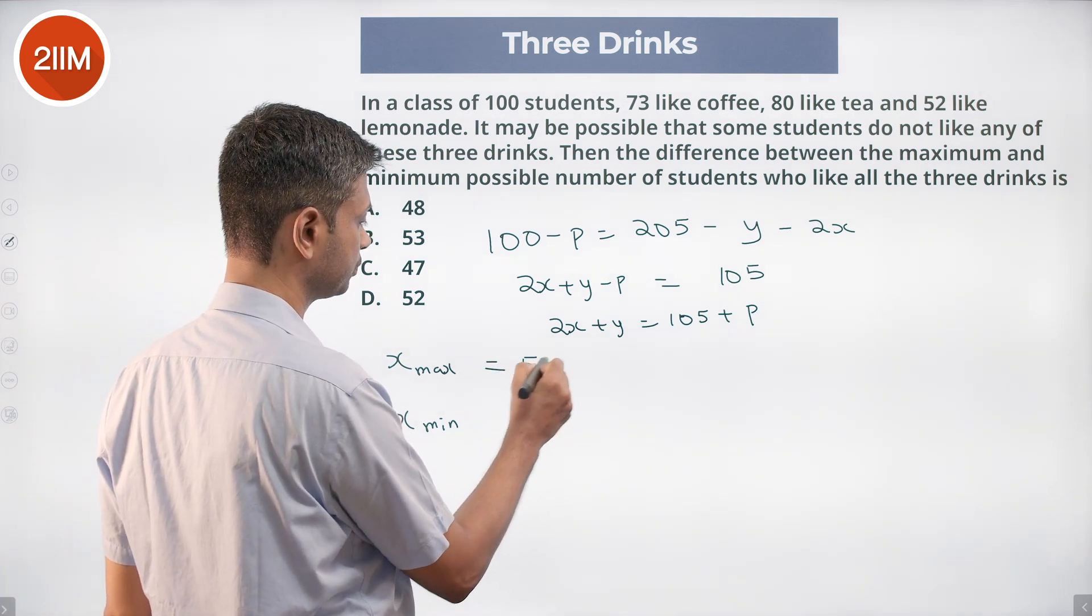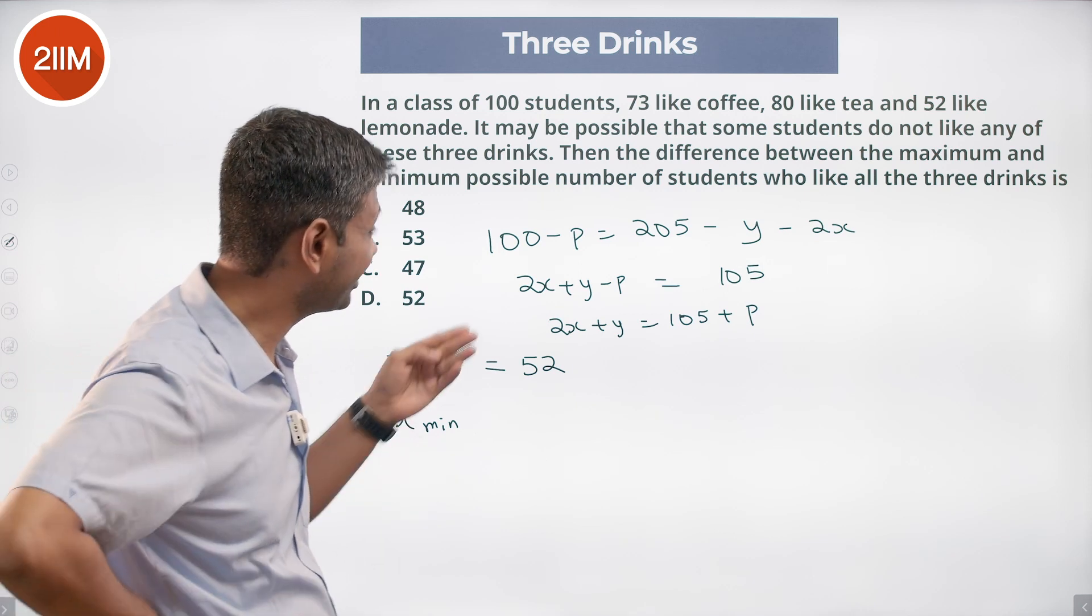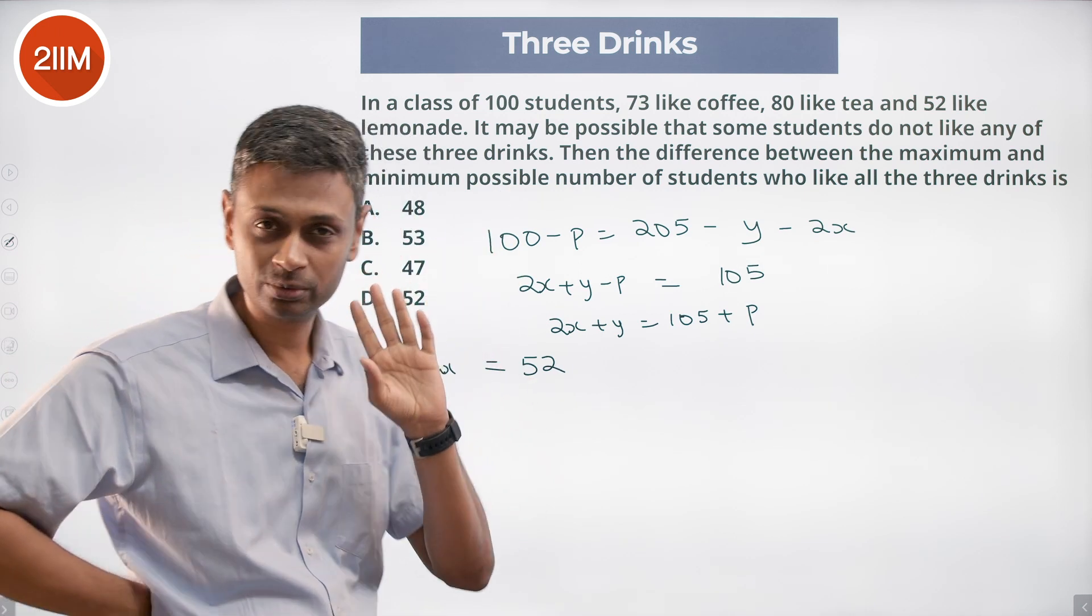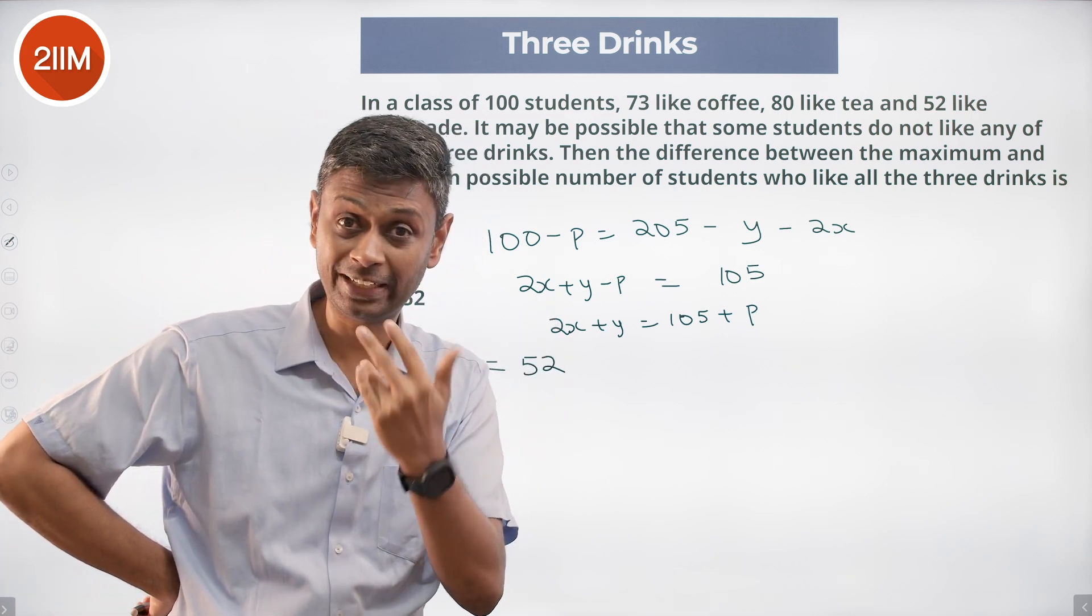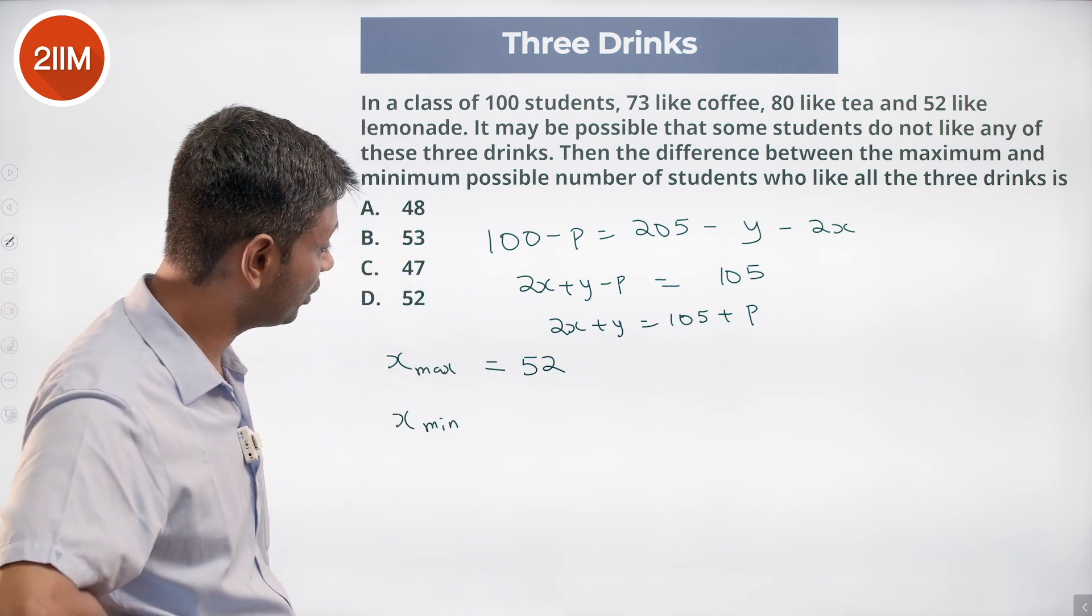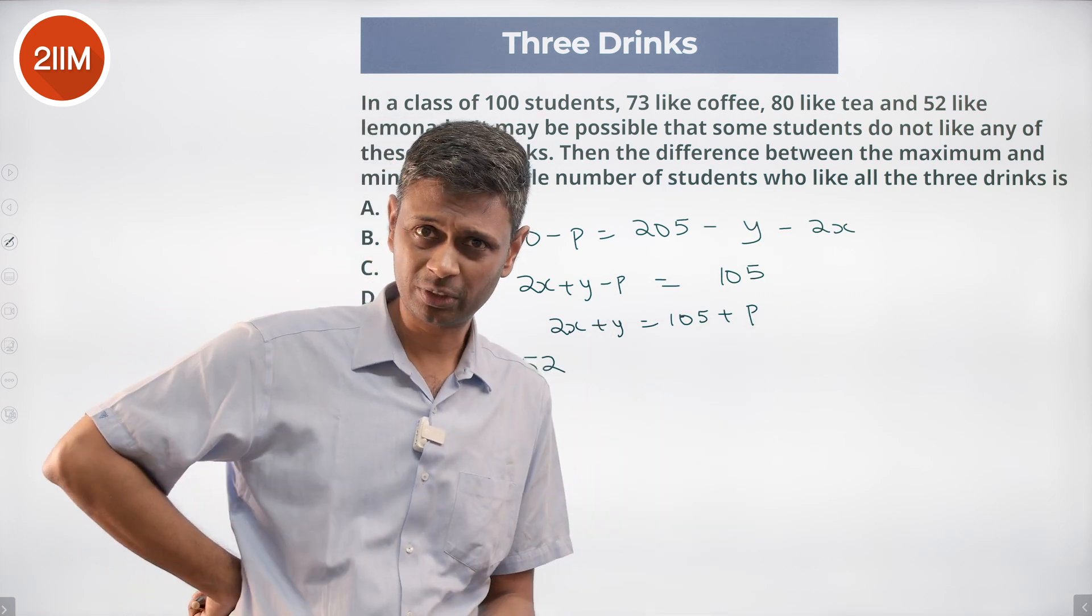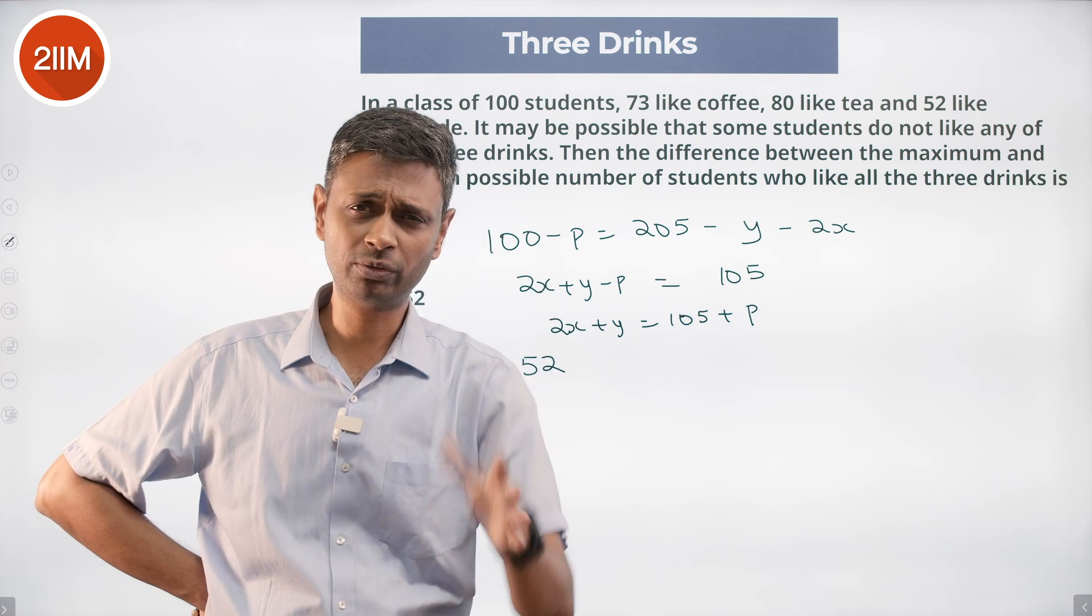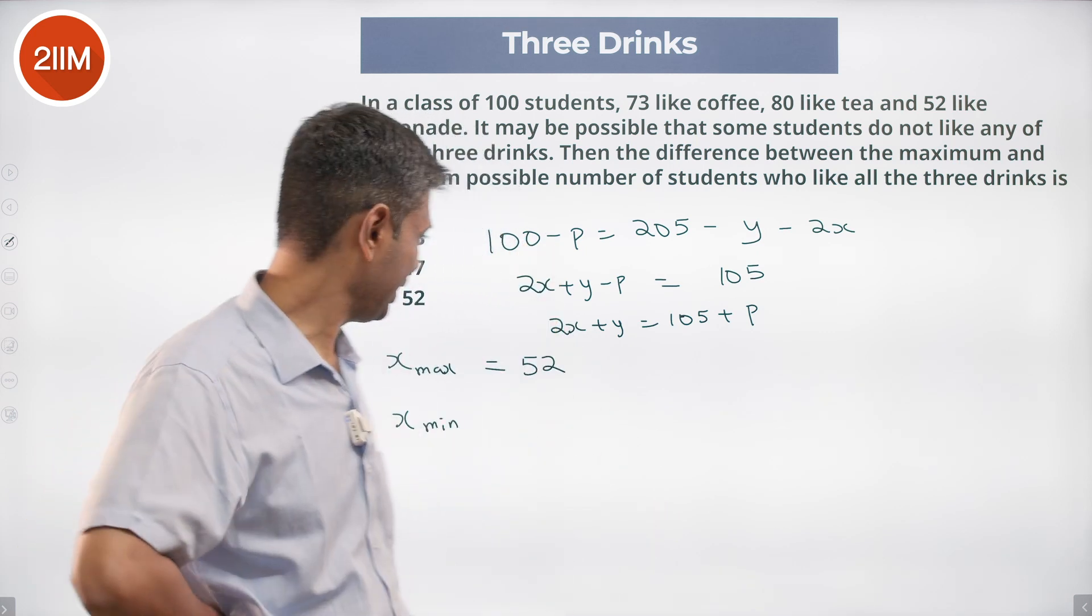So x maximum is 52. I put x as 52, everything works out rather well. I cannot put x as 53 because first of all my lemonade number is only 52. I put x as 53, y has to be negative - that's not possible. I cannot have y being negative. At the same time, if we put x as 53 and put p as 1 outside as 1, the moment I put x as 53 my lemonade constraint goes off. It cannot be more than 52.